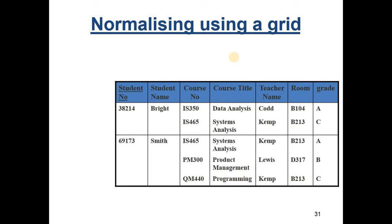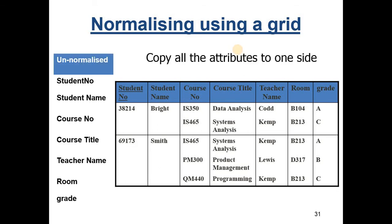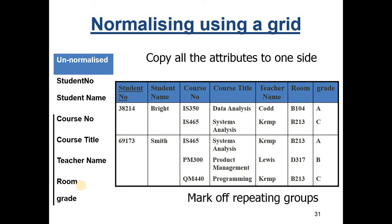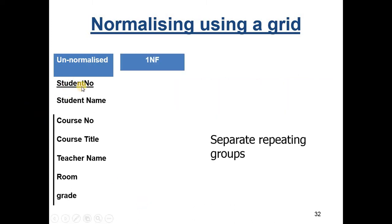First, we draw our grid by copying all of the attributes to one side — that is our unnormalized data. We can mark specific features: remove any derived attributes (there aren't any this time), and mark the repeating groups, which run from course number to grade. We have several courses for each single student, so the data is made up of a header in the first two columns followed by a repeating group in the remaining five. Now we have our repeating groups marked and we know the original suggested primary key because it was underlined.